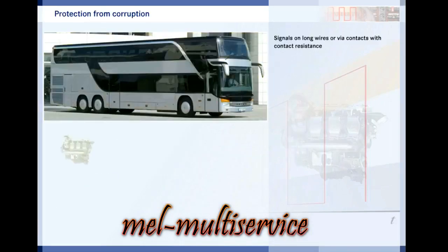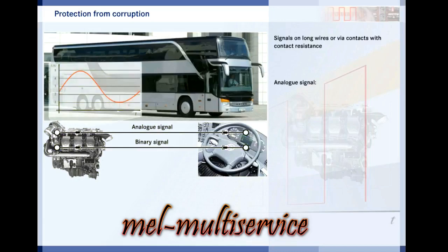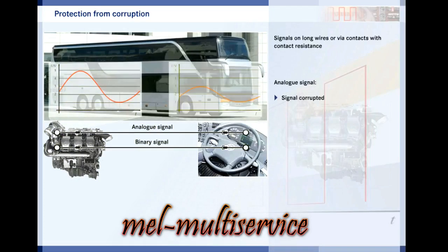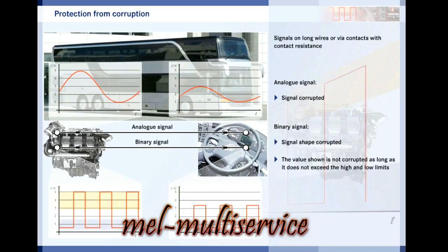Signals often have to be sent along long wires or via contacts with a contact resistance. With analog signals, the voltage decreases along the line. This corrupts the signal. The same applies to binary signals. However, as long as the voltage remains within the set ranges, the signal is not corrupted.